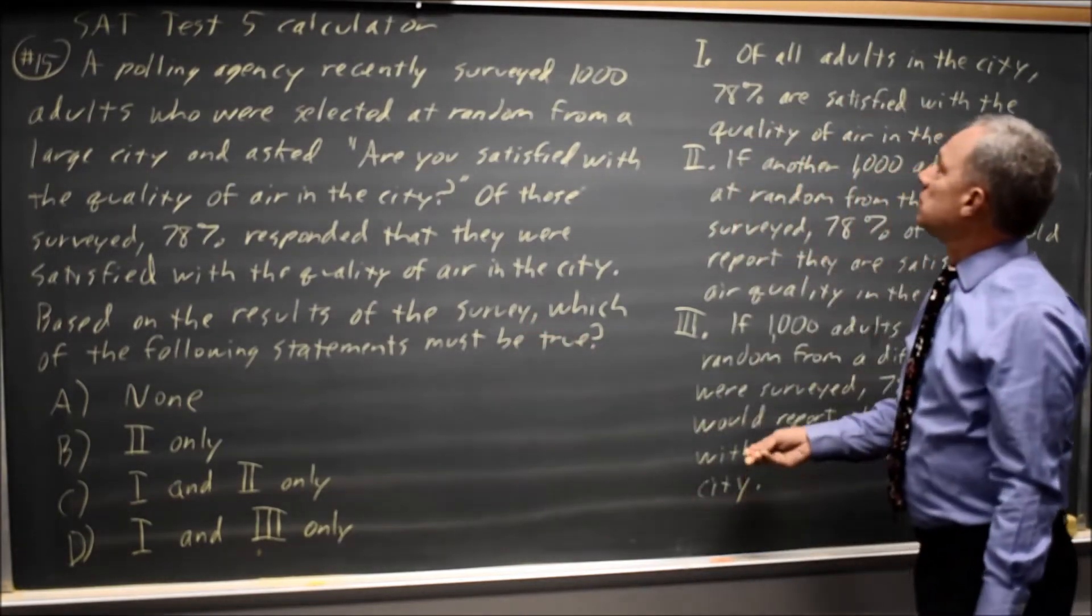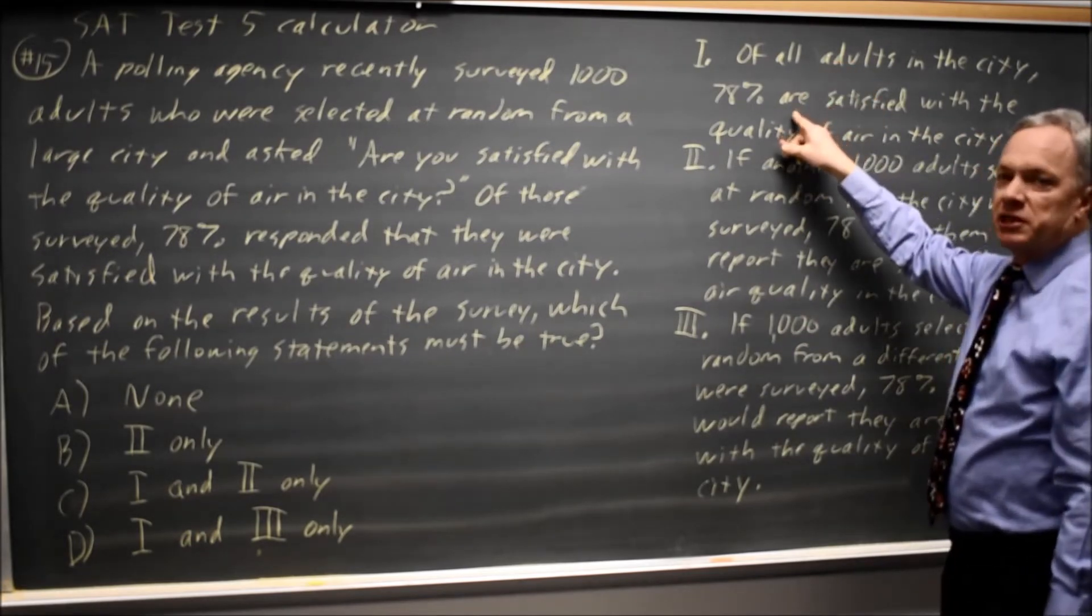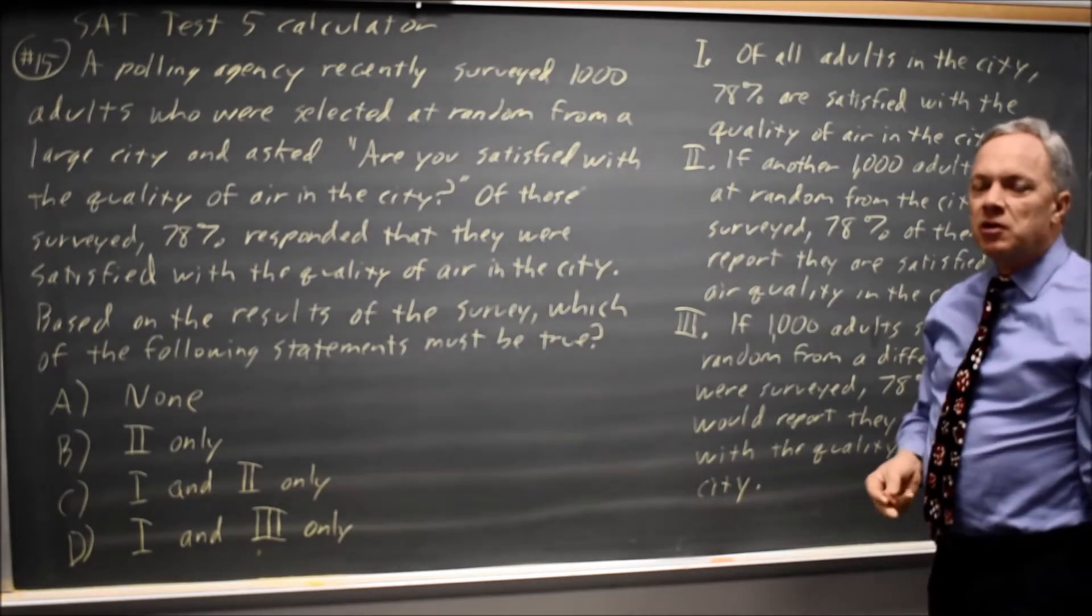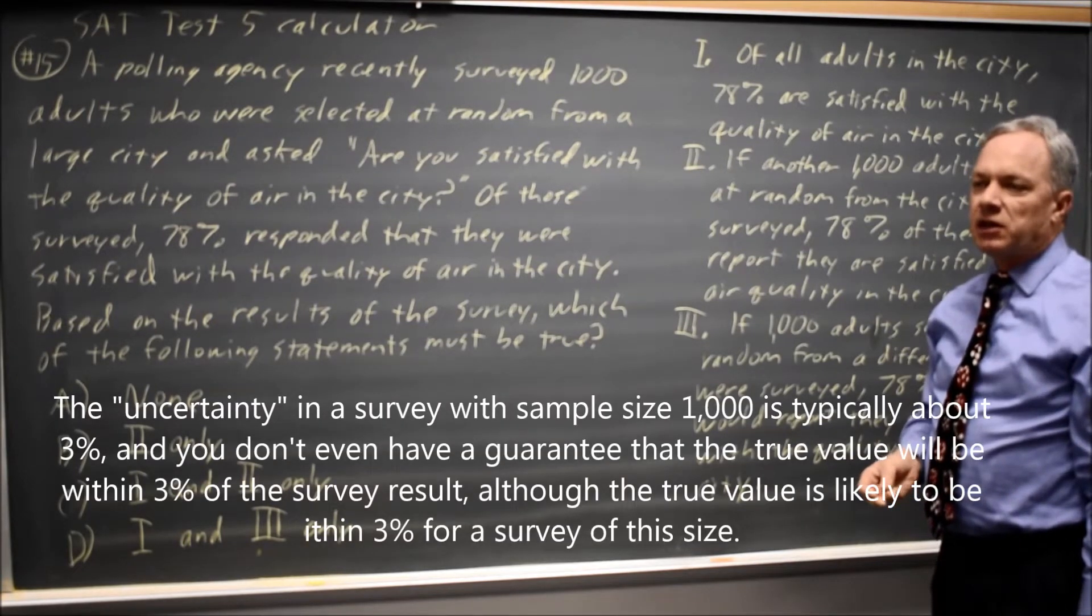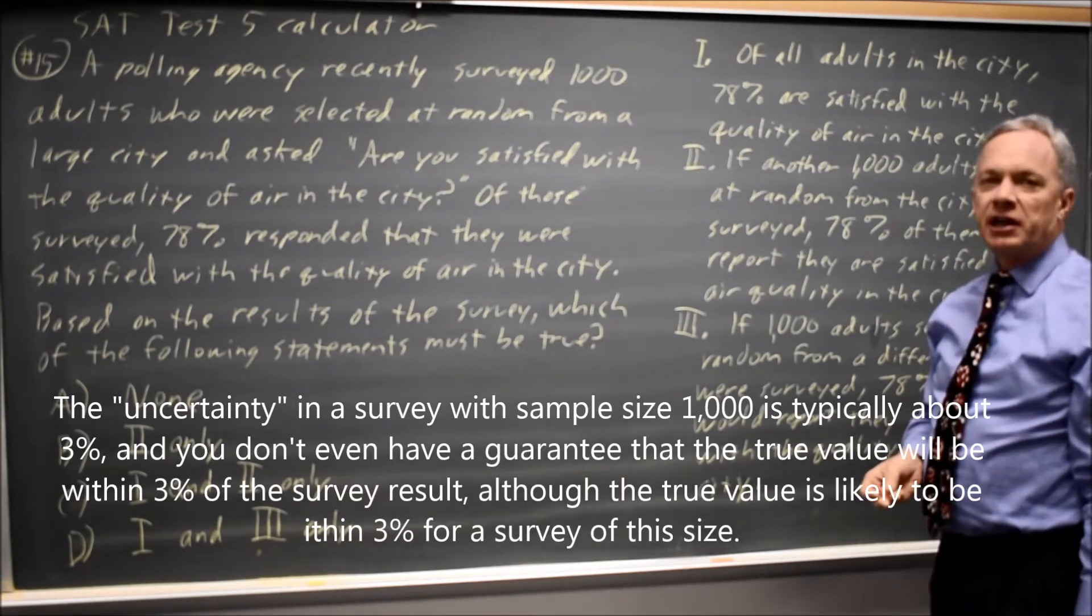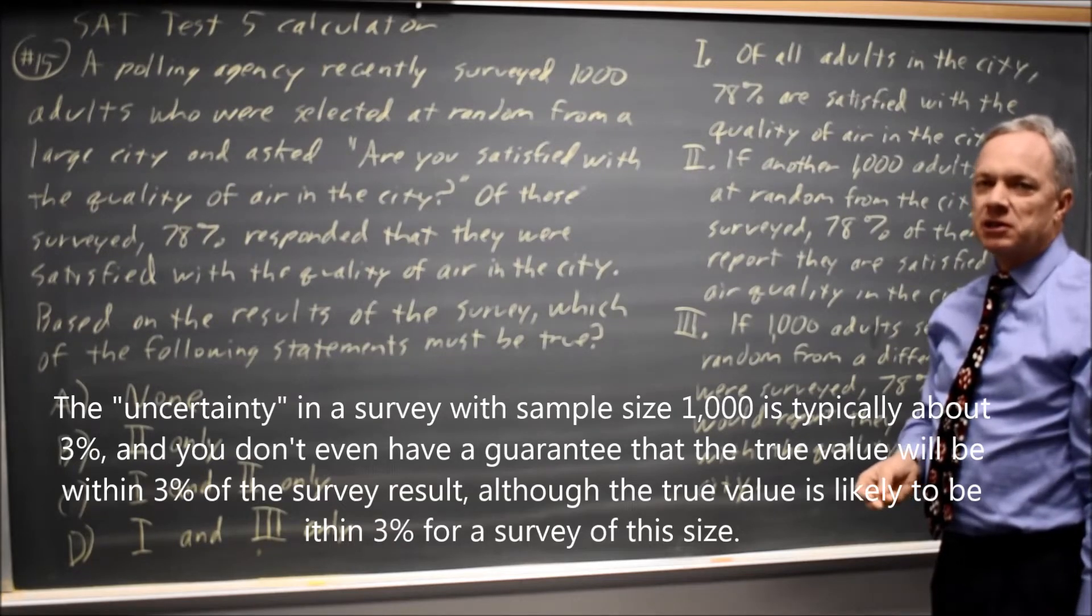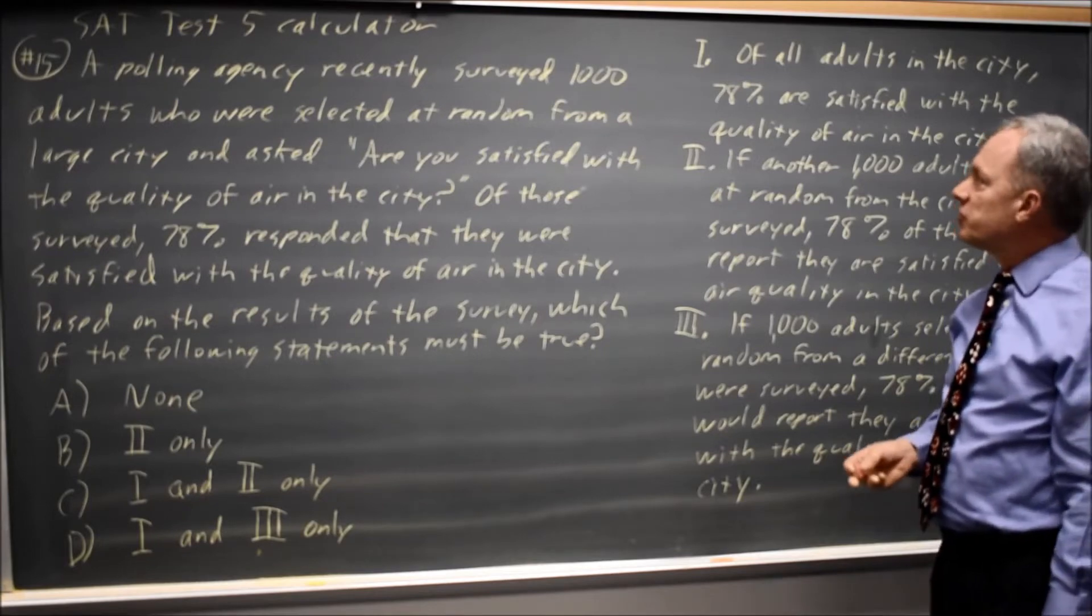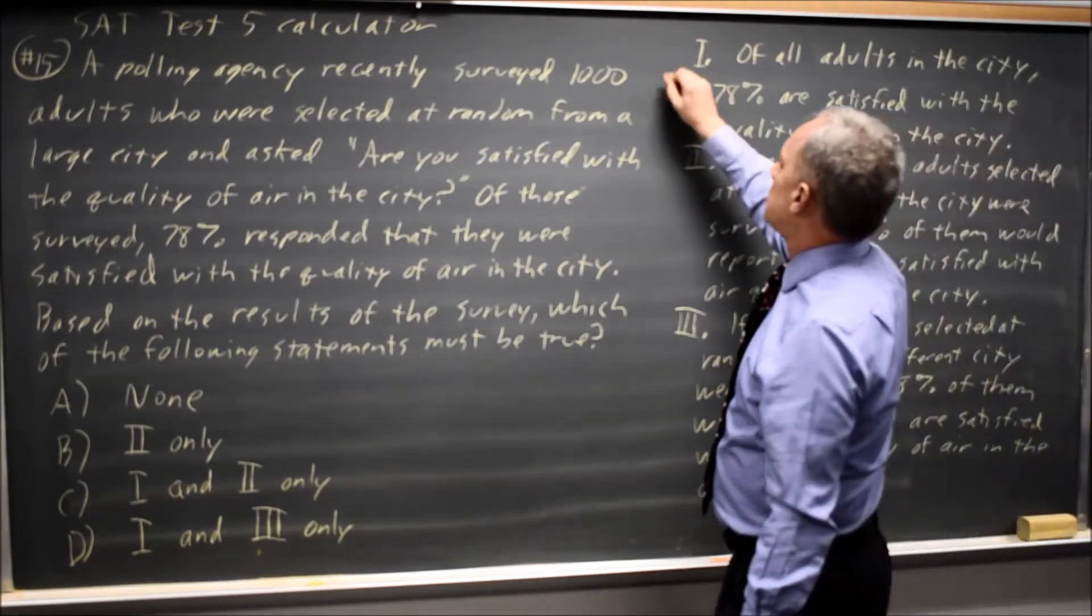Choice 1. Of all adults in the city, 78% are satisfied with the quality of air in the city. You don't have a guarantee that a survey will give an accurate result. That's why they have a margin of error, and sometimes results are outside the margin of error of the true value. So choice 1 is not correct.